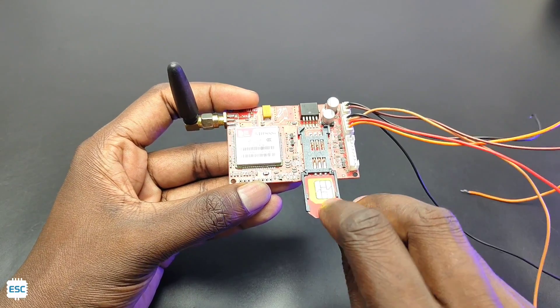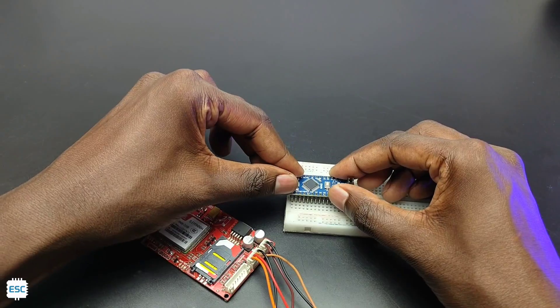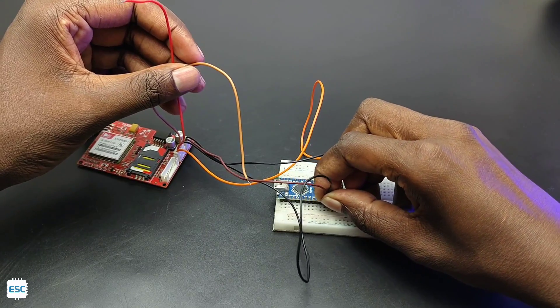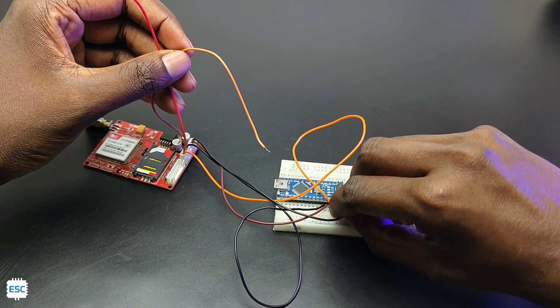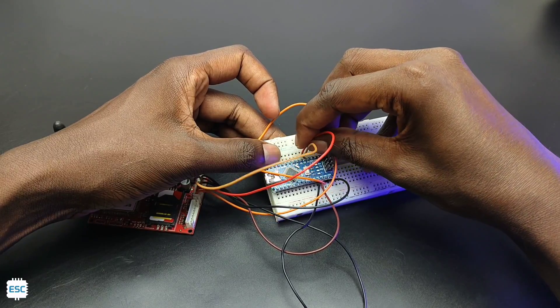Now let's connect everything. Connect the VCC pins of SIM900 to 5V of Arduino, grounds to ground of Arduino, TX to pin 2 of Arduino, RX pin to pin 3 of Arduino.